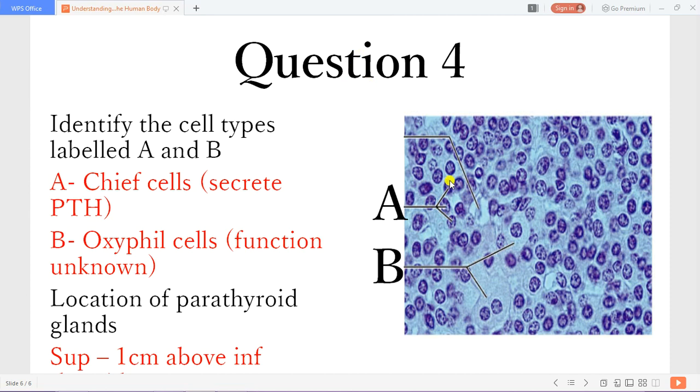Then you can identify this as the parathyroid gland. So A are the chief cells which secrete parathyroid hormone. And B, this clear cytoplasm, these cells with clear cytoplasm, these are the oxyphil cells. And currently their functions are unknown.